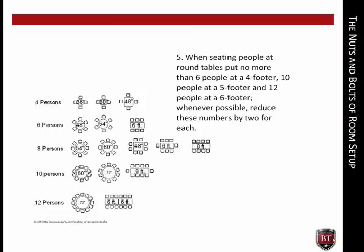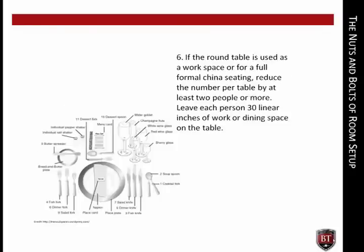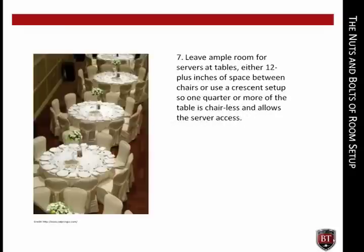Whenever possible, reduce these numbers by 2 for each table. If the round table is used as a workspace for a full formal china seating, reduce the number per table by at least 2 people or more. Leave each person 30 linear inches of work or dining space on the table. Leave ample room for servers at tables — either 12-plus inches of space between the chairs, or use a crescent setup so one quarter or more of the table is chairless and allows the server access.